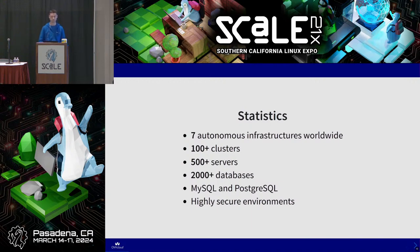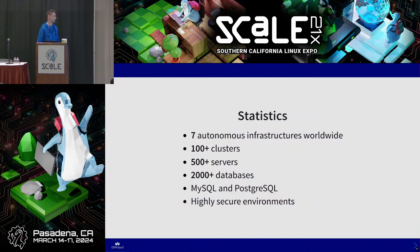A little bit about statistics. We have seven autonomous infrastructures around the world, mainly in Europe, but also in Canada and the US. This represents hundreds of clusters, spread around with 500 servers and more, and 2,000 databases. We have MySQL and Postgres, and a little bit of MongoDB. And importantly, we manage those databases in highly secure environments.